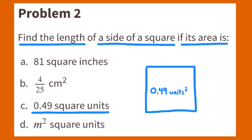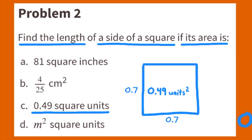If the area of a square is 49 hundredths square units, or 0.49 square units, then the side lengths must be 7 tenths, or 0.7, because 0.7 times 0.7 equals 0.49, or 7 tenths times 7 tenths equals 49 hundredths. The side lengths for square C are 7 tenths of a unit.